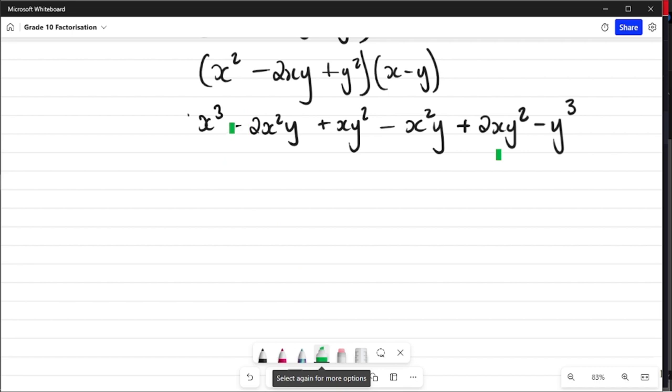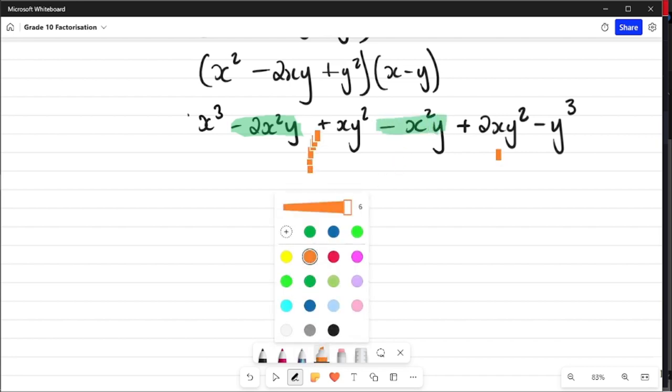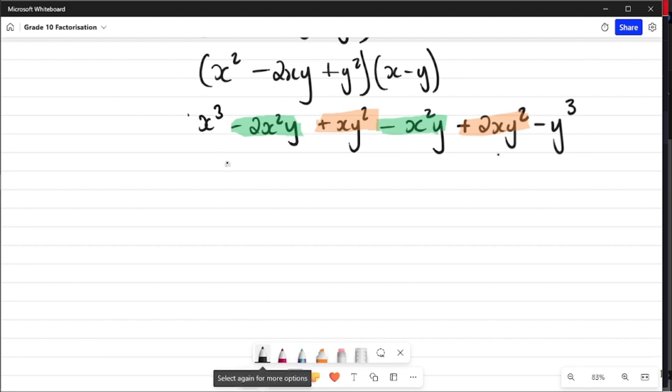When we look at our like terms, we have those with x²y and x²y, and then we have other like terms that would be xy² and xy². And then x³ does not have a like term, as well as y³. Therefore our final answer now is x³, and the green ones would give us -3x²y. The orange ones are going to give us +3xy², and then the last term which is -y³.